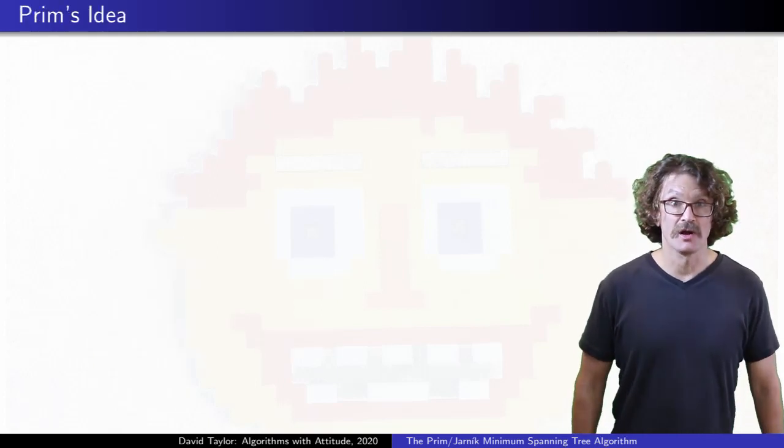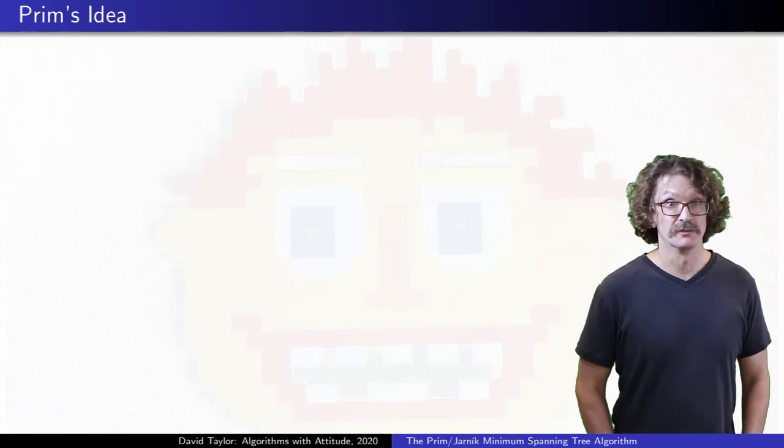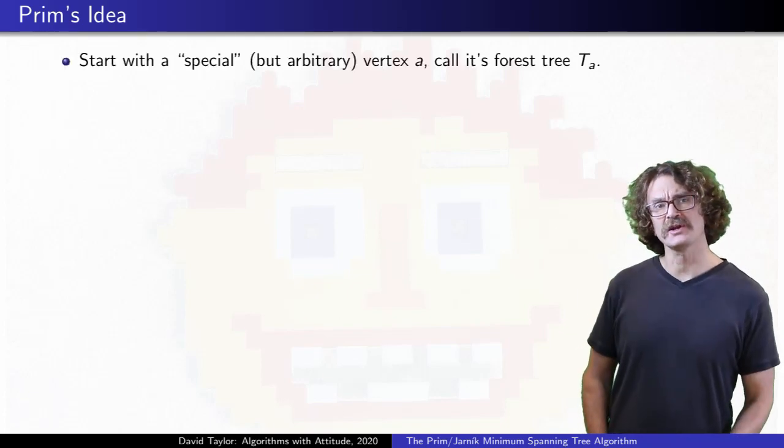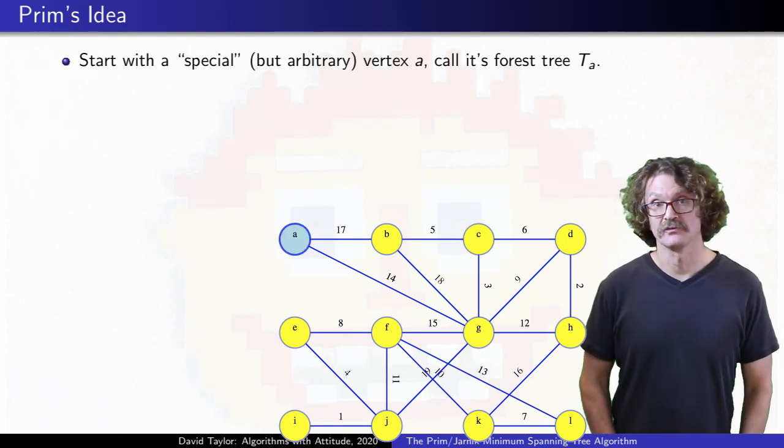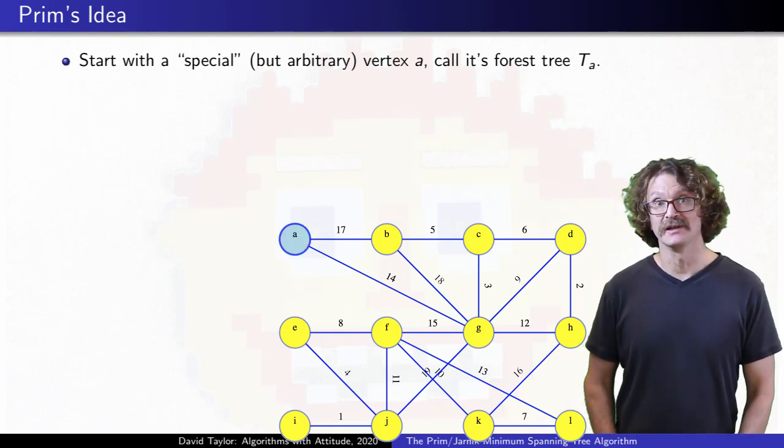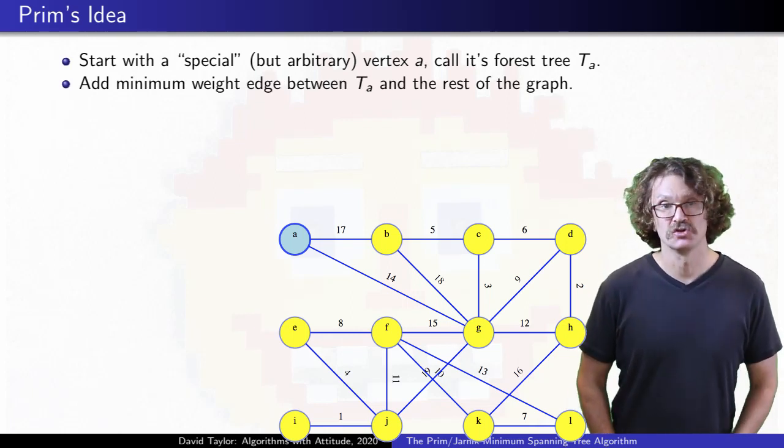Like our other algorithms, we start with a forest of single vertex trees, for every vertex in the graph, but unlike Kruskal and Borufka, there is one special vertex from that forest, let's say vertex A. A's tree is special for this algorithm. We will repeatedly find the minimum edge weight leaving it, and add it to our forest.